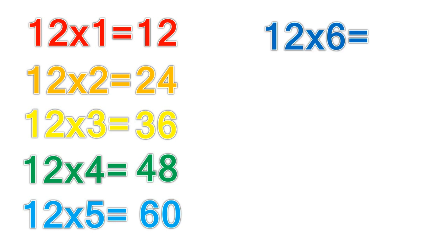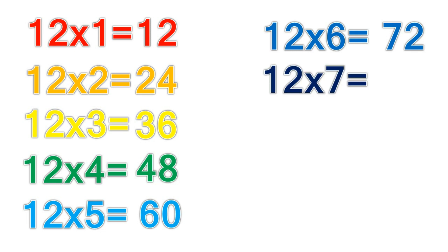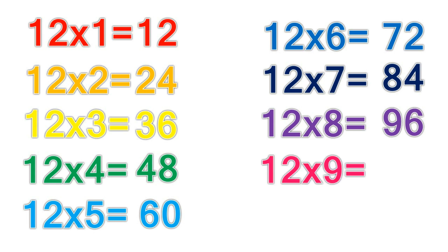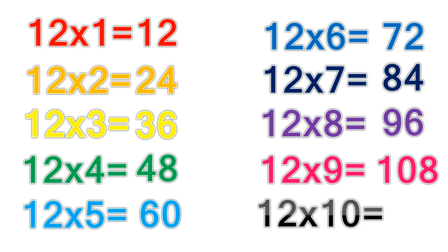12 times 6 equals 72. 12 times 7 equals 84. 12 times 8 equals 96. 12 times 9 equals 108. 12 times 10 equals 120.